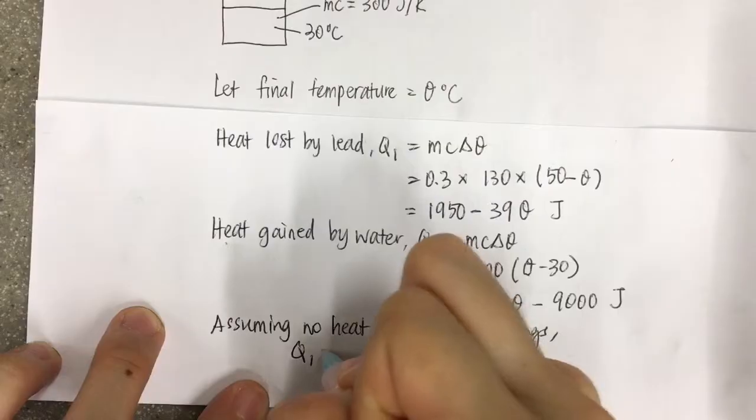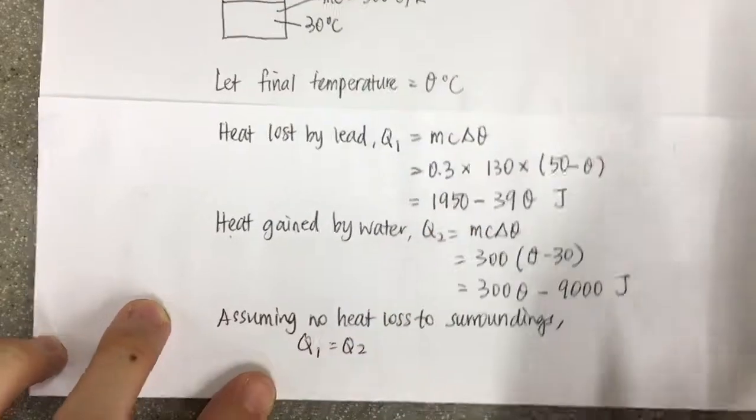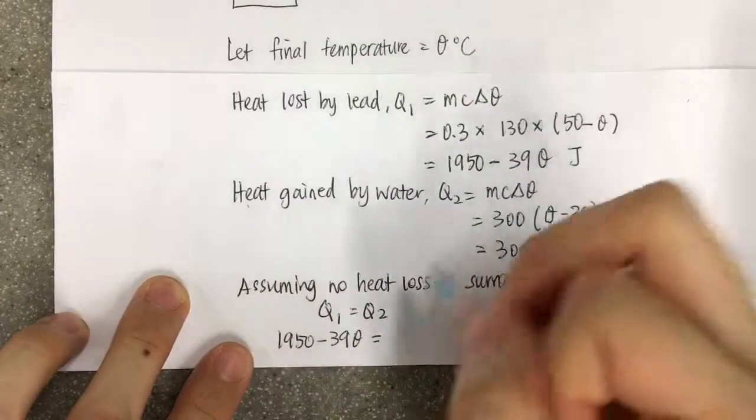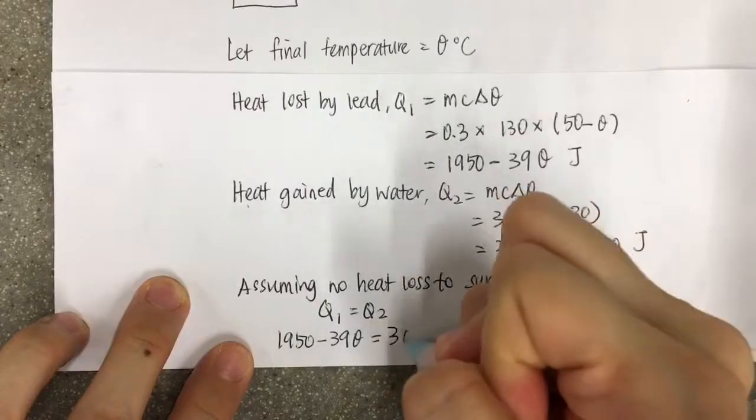Q1 is equal to Q2. So 1950 minus 39θ equals 300θ minus 9000.